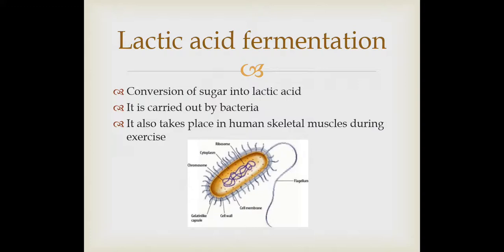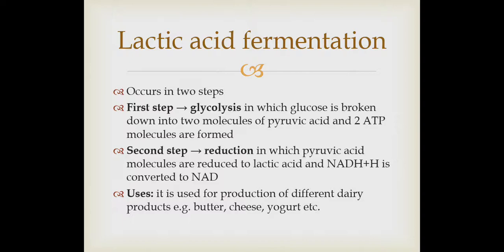Coming toward the second type of fermentation: lactic acid fermentation. As the name indicates, the type of fermentation in which the end product is lactic acid is called lactic acid fermentation. In other words, when sugar is converted into lactic acid in the absence of oxygen, it is called lactic acid fermentation. It is carried out by bacteria, and it also takes place in human skeletal muscles during exercise. Similarly, it occurs in two steps: the first step is glycolysis — the same procedure as in alcoholic fermentation — in which glucose is broken down, two molecules of pyruvic acid are formed, and there is a net gain of two ATPs.